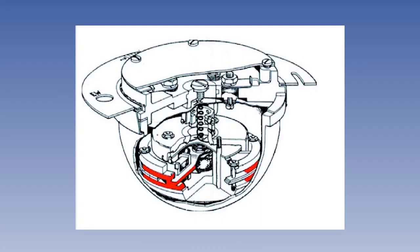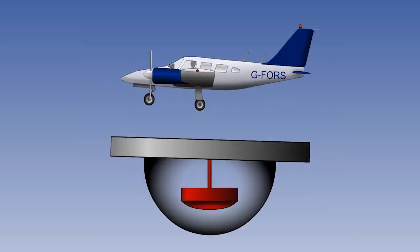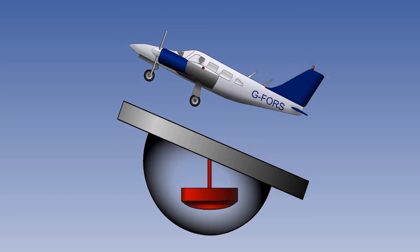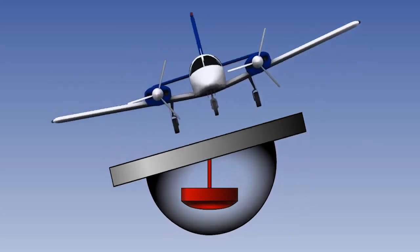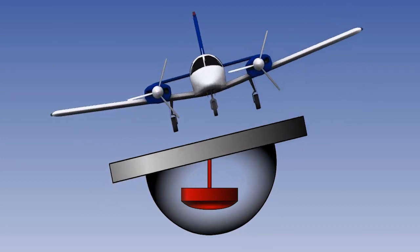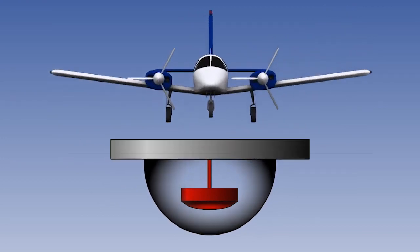The primary component is the flux valve, a three-spoke device. The flux valve is pendulously mounted on a device known as a hooks joint, which enables it to hang level, even if the aircraft pitches and banks up to 25 degrees.